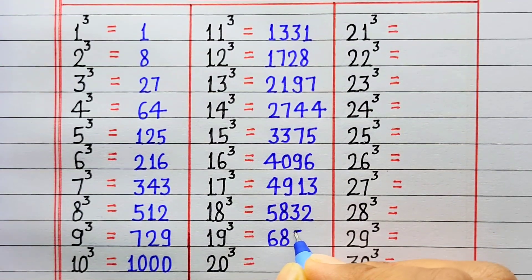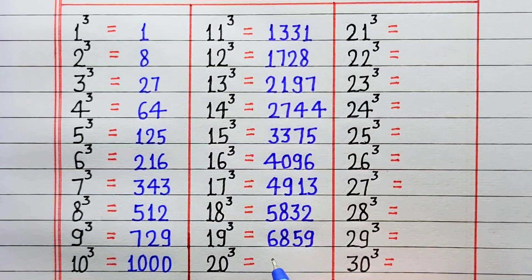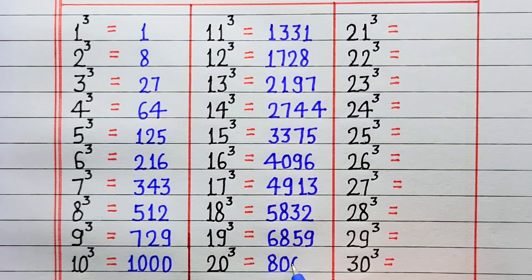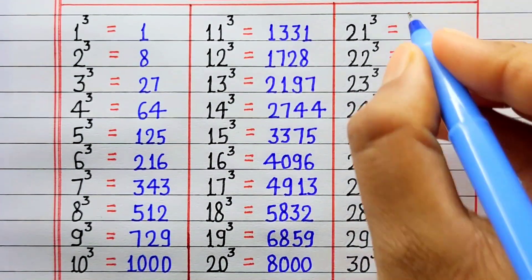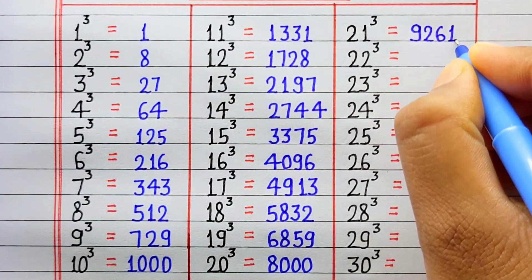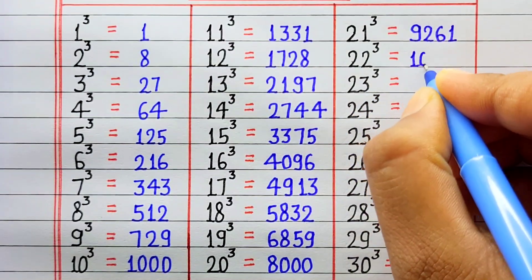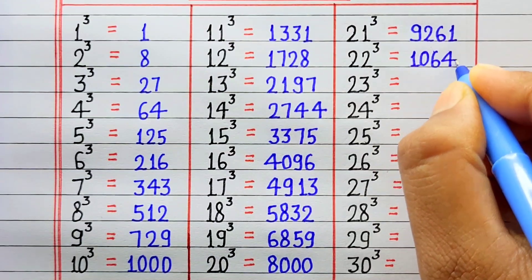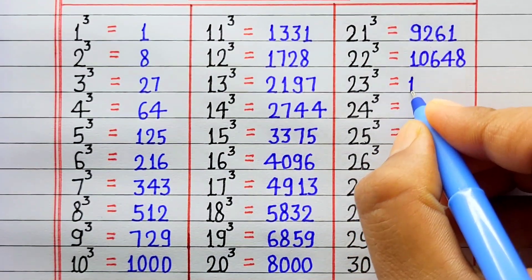Cube of 19 is 6859. Cube of 20 is 8000. Cube of 21 is 9261. Cube of 22 is 10648.